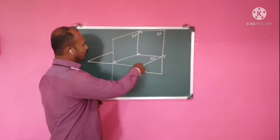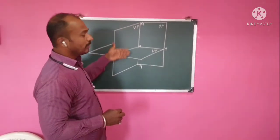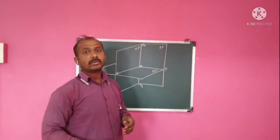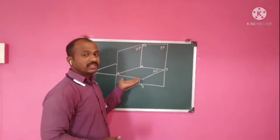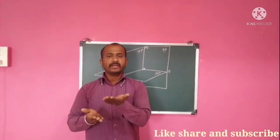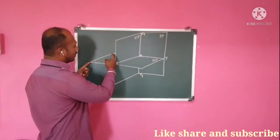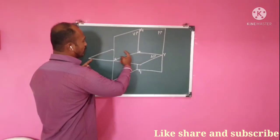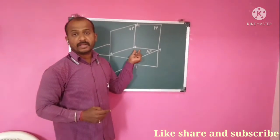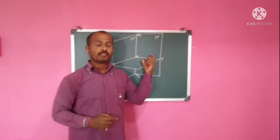The first plane is the horizontal plane, HP. The horizontal plane is the plane which is parallel to the ground. In this figure, this entire portion is known as HP, that is horizontal plane. The horizontal plane is also known as the HRP — Horizontal Reference Plane.